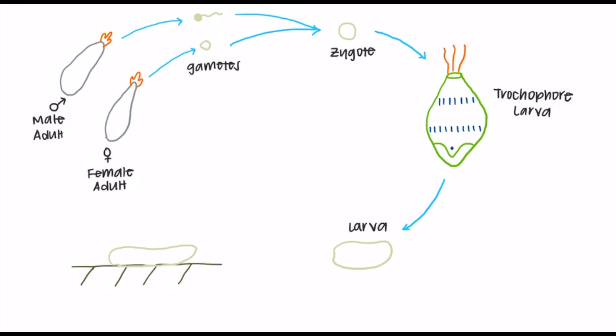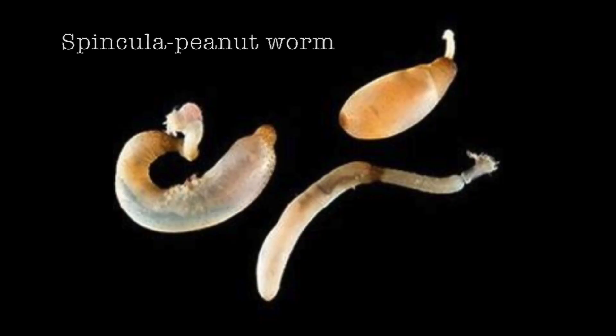However, some species do reproduce asexually. They do this by splitting the body in half and regenerating what the other half does not have, a process called budding.